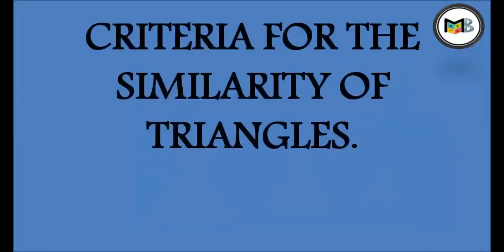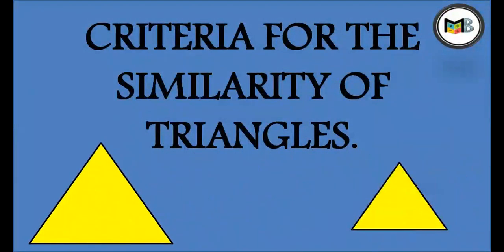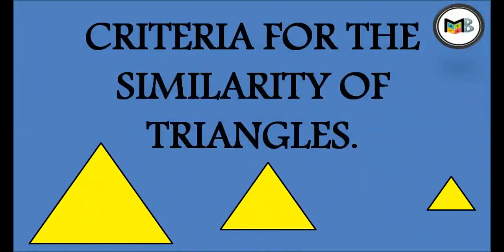Hello everyone. The topic of this video is criteria for similarity of triangles. As we have seen in the previous video, two triangles are similar if their corresponding angles are equal and their corresponding sides are in the same ratio or in the same proportion. Let us revise this.